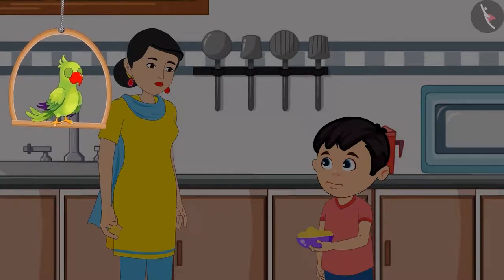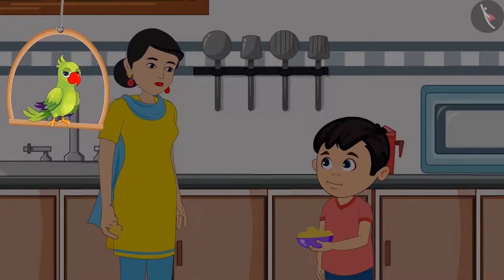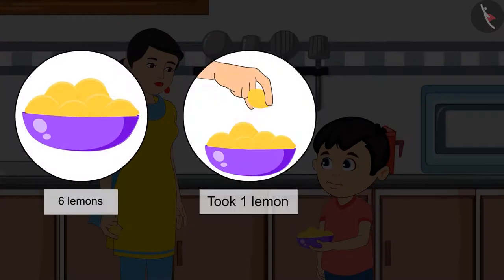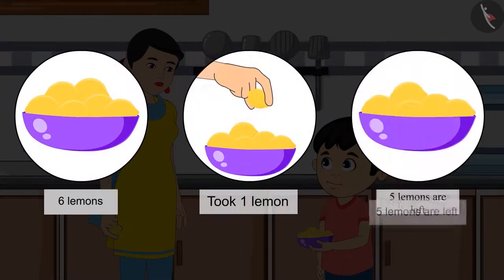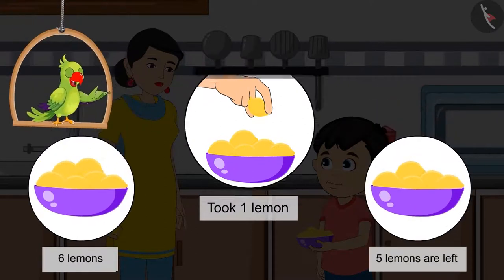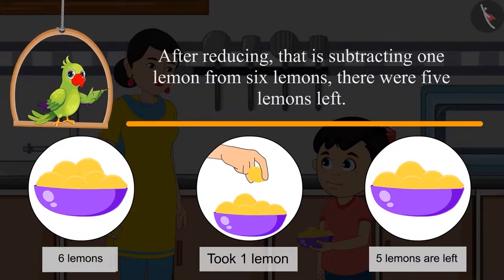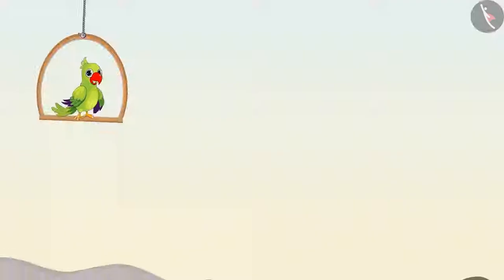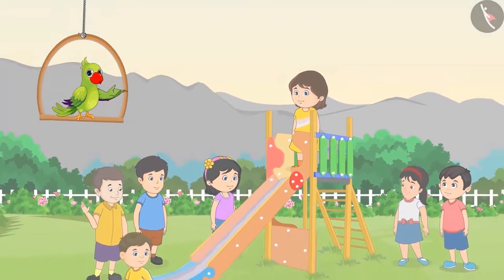So children, can you tell me how many lemons did Chotu keep back in the fridge? Out of the six lemons, Chotu's mother took one lemon, so now there are five lemons left. Did you see how after subtracting one lemon from six lemons, there were five lemons left?